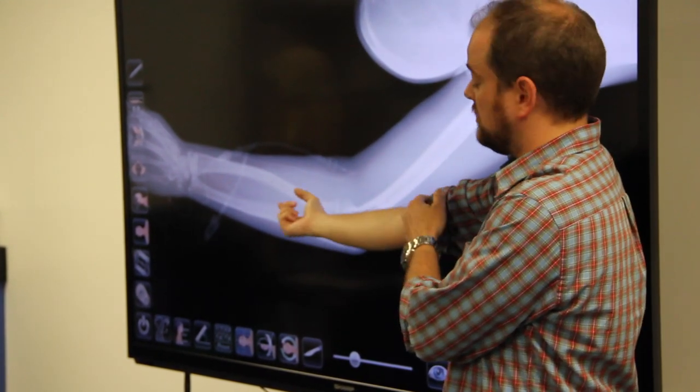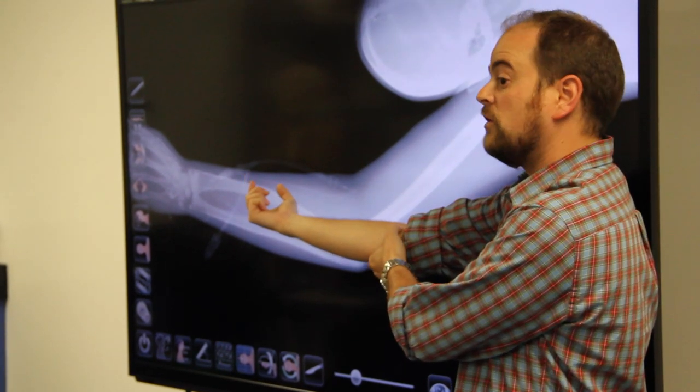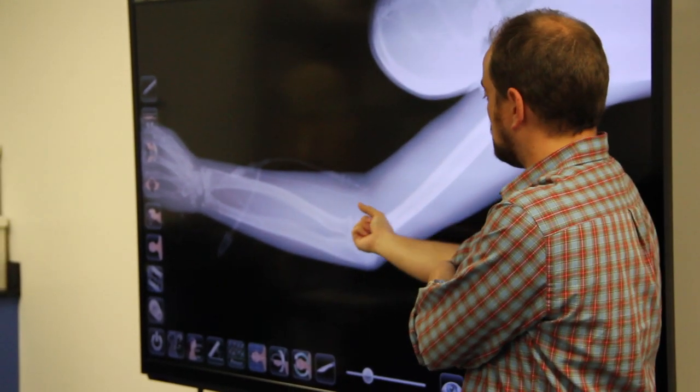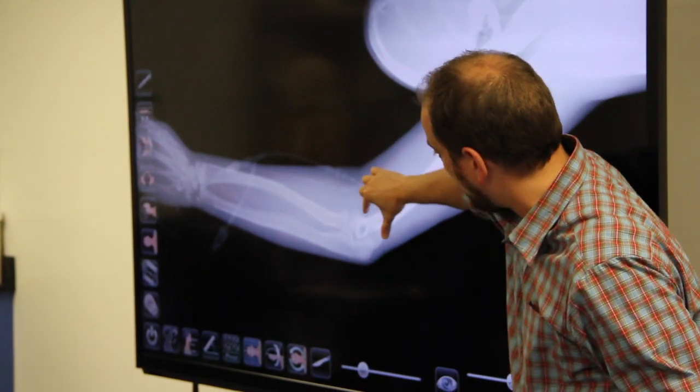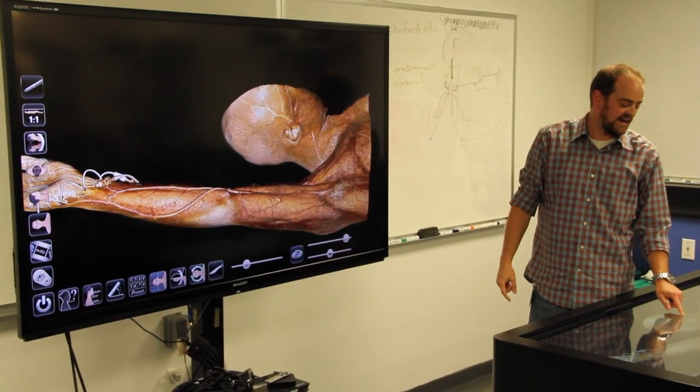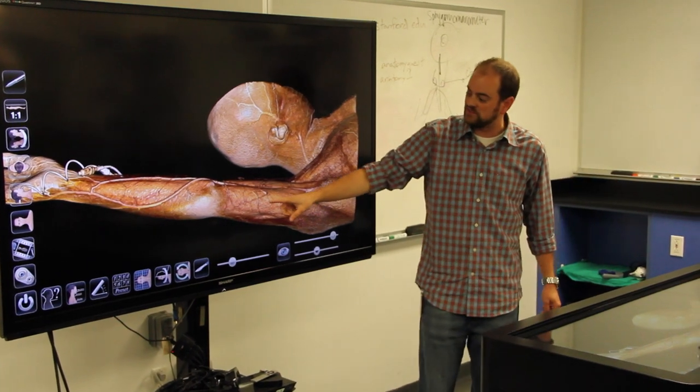What's going to limit flexion is when the opposite end, the coronoid process of the ulna, sits in the coronoid fossa. But you can see here that there's an actual, if we follow the attachment of the triceps distally.